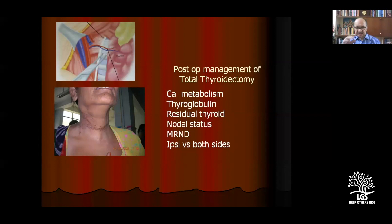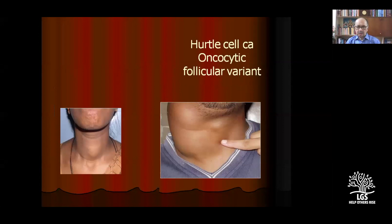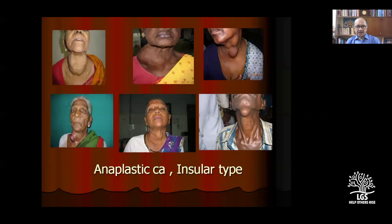Nodal status involves central block dissection. Hurthle cell carcinoma is an oncocytic, follicular variant also present in the carotid region. Trucut biopsies can be advised if we have a solid tumor in the thyroid nodule. An insular variety has been found in various grades of anaplastic carcinomas — well differentiated and poorly differentiated insular variety — which is also grouped under anaplastic carcinomas.